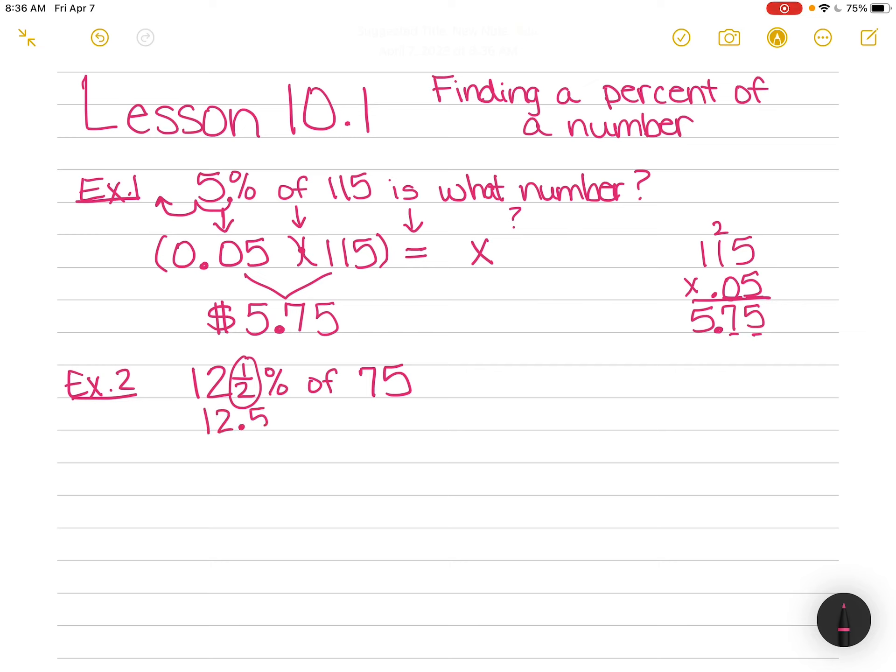So I have 12.5% of 75, and I'm going to move this decimal place two places to the left. So I have 0.125, of is times 75. Now, because I don't have a calculator with me, I do have the answer next to me, but I'm just going to show you anyway.